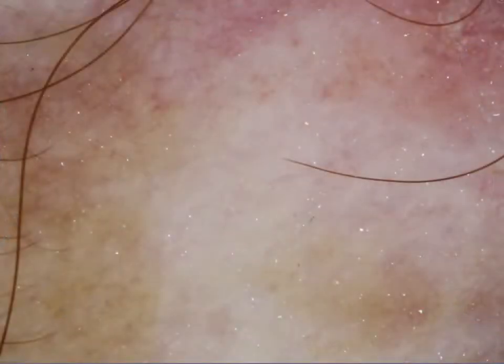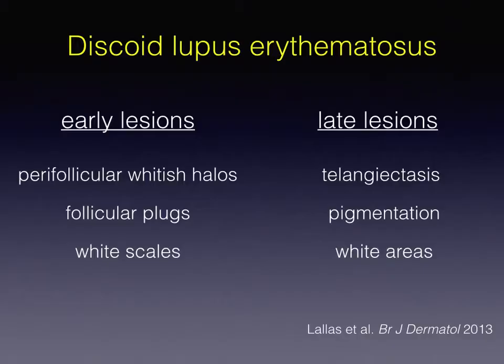In late stages, pigmentation structures may also appear. Finally, end-stage lesions dermoscopically display nothing but white structureless areas corresponding to diffuse dermal fibrosis. To sum up, early lesions of discoid lupus are dermoscopically typified by perifollicular whitish hollows, follicular plaques and hyperkeratosis, while late lesions display telangiectasia, pigmentation structures and wide structureless areas.